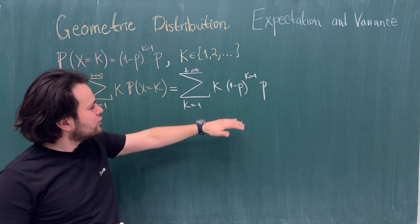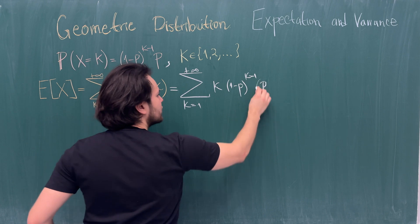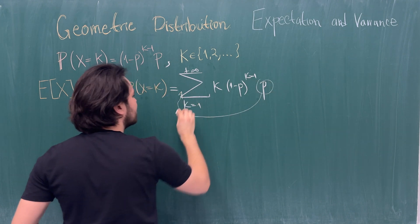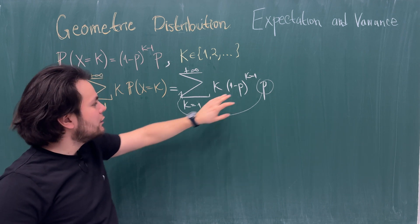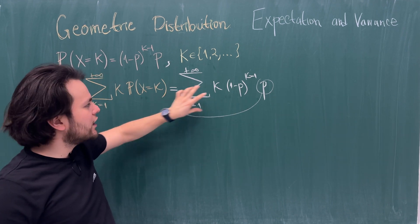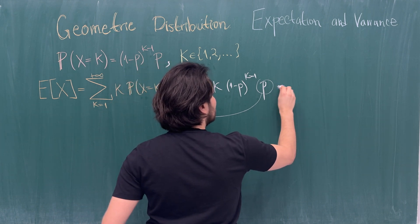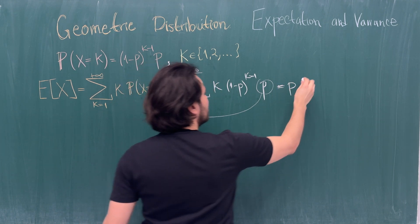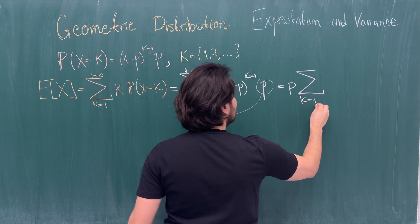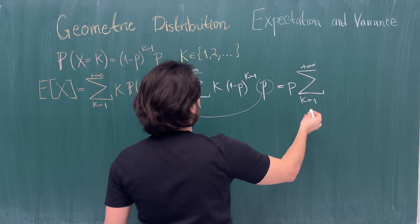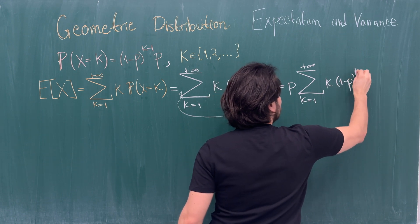Since p is a constant, we can factor it outside the sum. So we have p multiplied by the sum from k=1 to infinity of k · (1-p)^(k-1). Now we need to figure out how to compute this inner series.